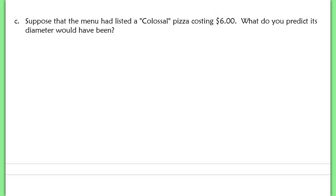Next one. It says, suppose that the menu had listed a colossal pizza costing $6. What do you predict its diameter would have been? So this time, they're giving you a y value. They're saying, let y equal 6, and they want you to find x. We can do that same thing using our function and just doing it algebraically, where we plug in 6 equals 0.01x squared minus 0.03x plus 0.45. We would subtract that 6 over.